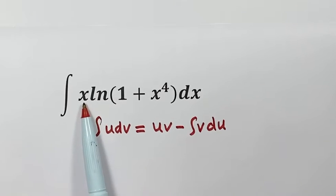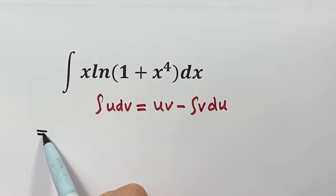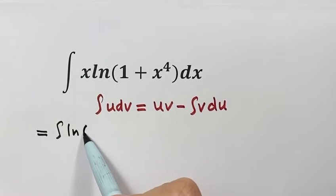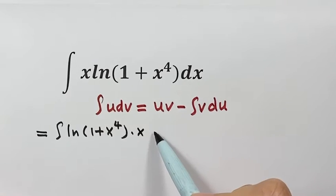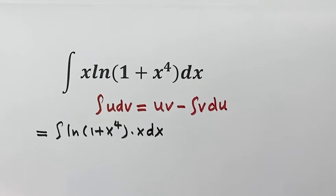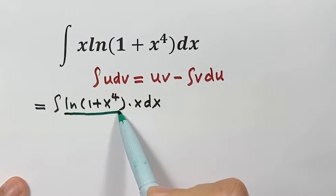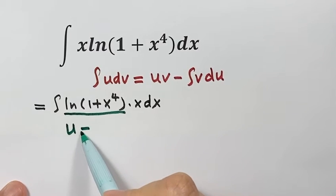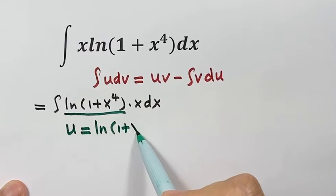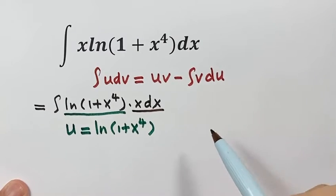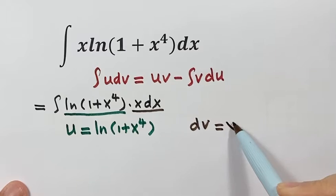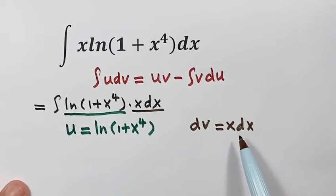Let's rewrite the integrand. We put x after natural log, so we write natural log of 1 plus x to the fourth, then x, then x dx. We choose natural log as u, so u equals natural log of 1 plus x to the fourth. The reason is that when it is differentiated, it simplifies. Then we set dv equal to x dx, because it is easy to integrate.